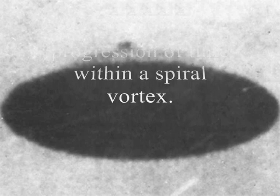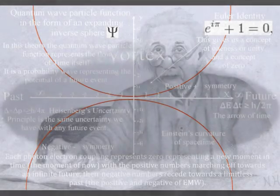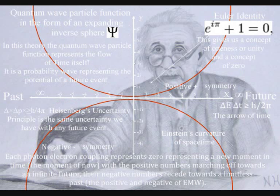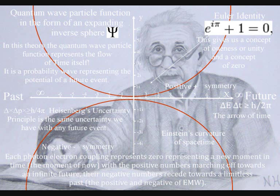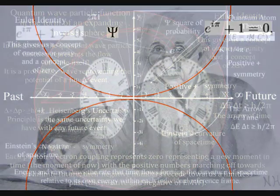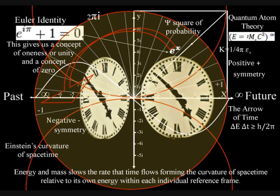In special relativity, moving clocks run slower, and in general relativity, clocks run faster higher in a gravitational field. Therefore, we can see that the greater the energy of an individual reference frame, the slower time runs within that reference frame.